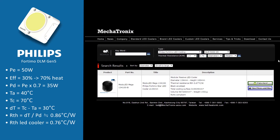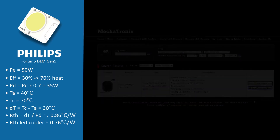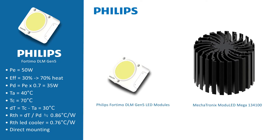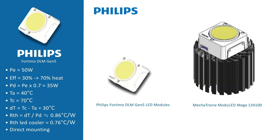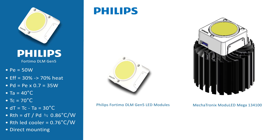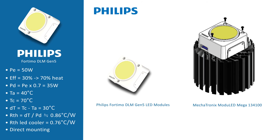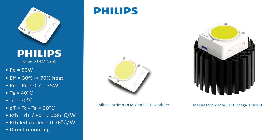We see that we get one result, namely the Modulate Mega 134100. This is a passive cooler with a diameter of 134 millimeters and a height of 100. If you go deeper into the datasheet, you would find a lot of useful information with regards to the mounting and the thermal behavior of this Modulate Mega heatsink. If you need further information, of course you're always welcome to contact us.